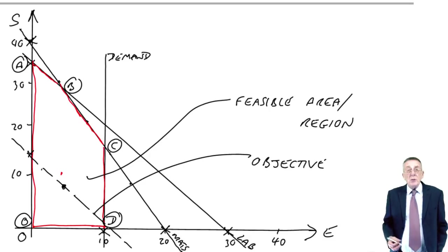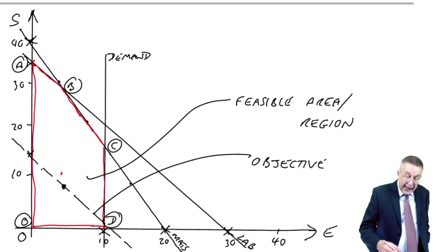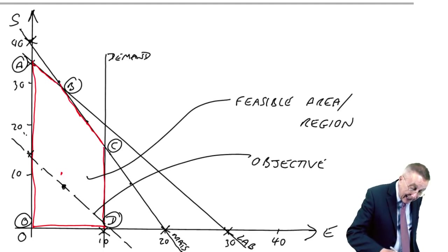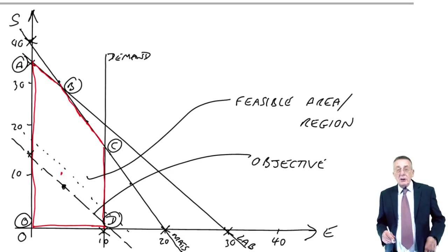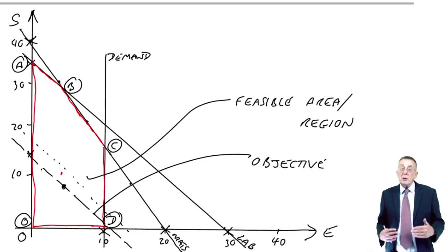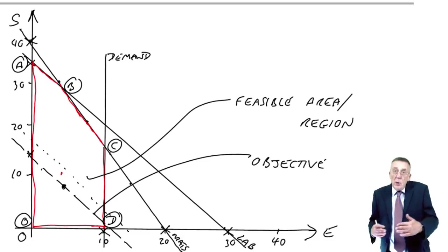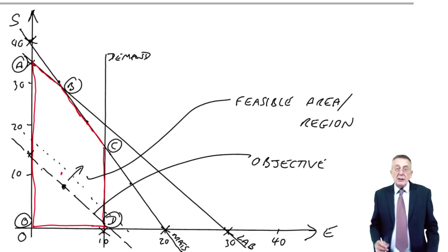Maybe the contribution will be 100. But if you repeated the exercise with a contribution of 100, you'll get a line like this, which would be exactly the same angle, exactly the same angle, slope, gradient, whatever word you want to use. But the more the contribution is, the further out it will be.